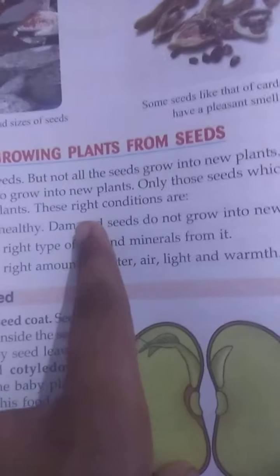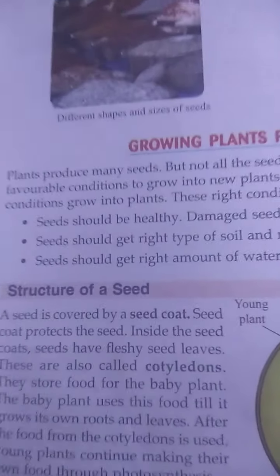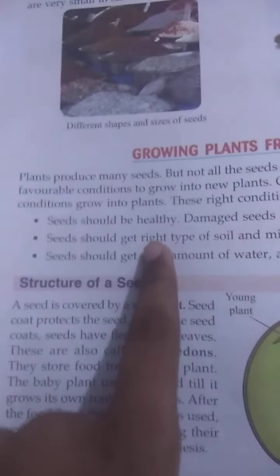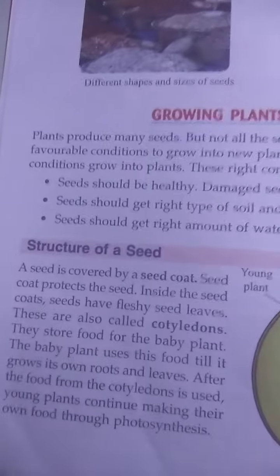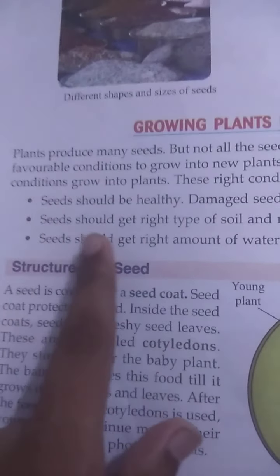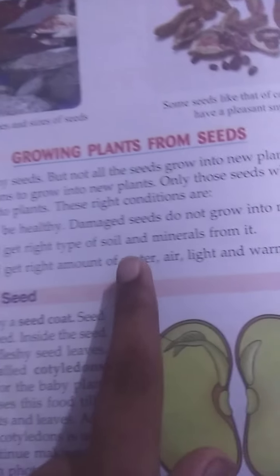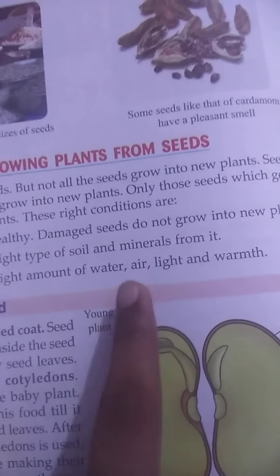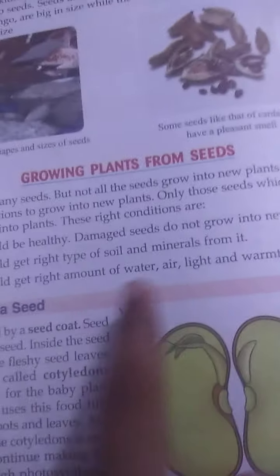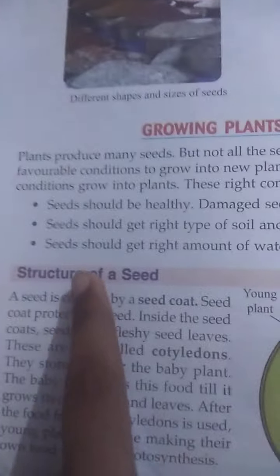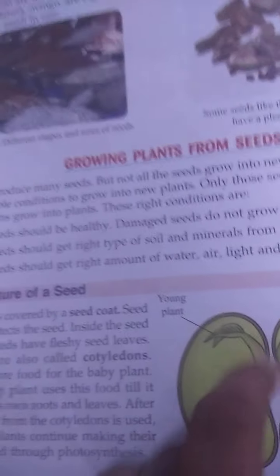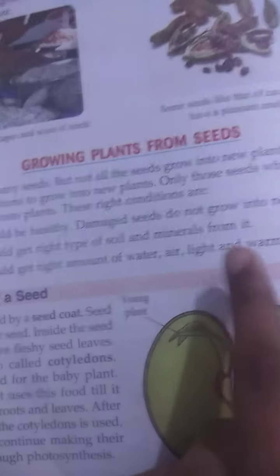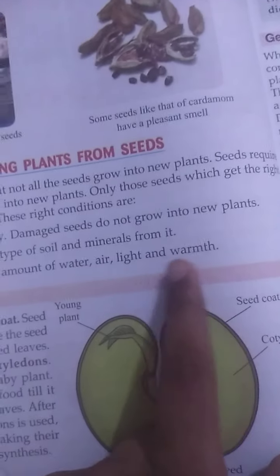These right conditions are: seeds should be healthy — damaged seeds do not grow into new plants. Seeds should get the right type of soil and minerals from it. Seeds should also get the right amount of water, air, light, and warmth.